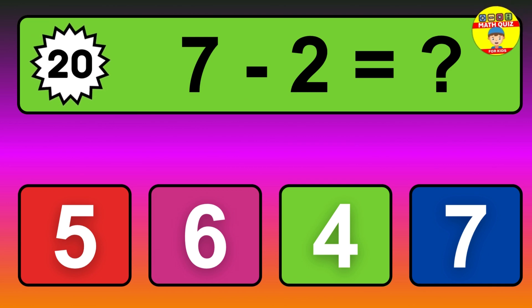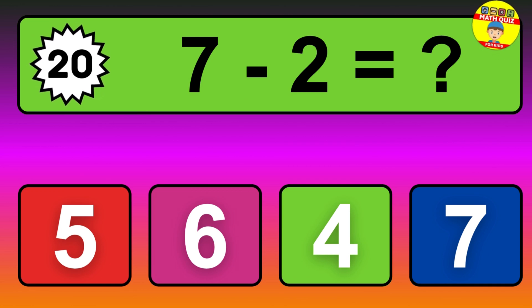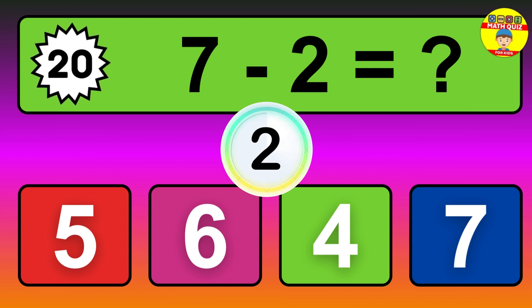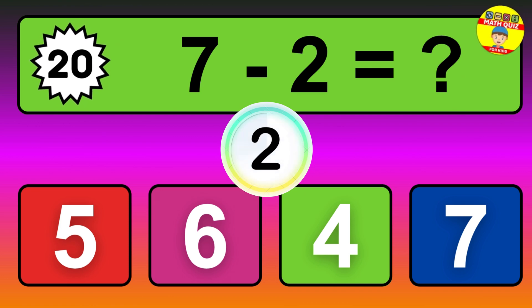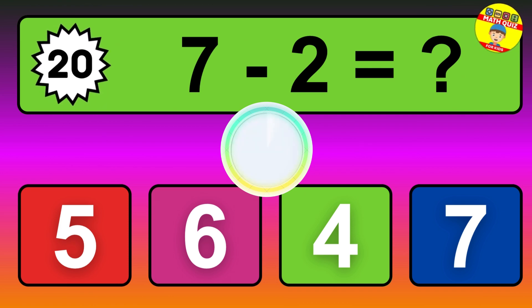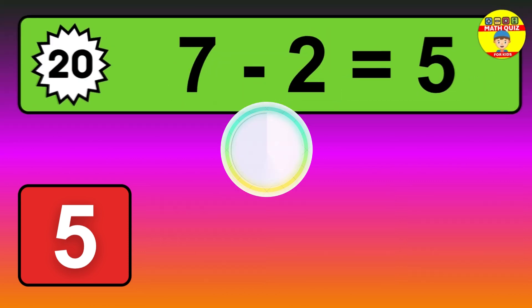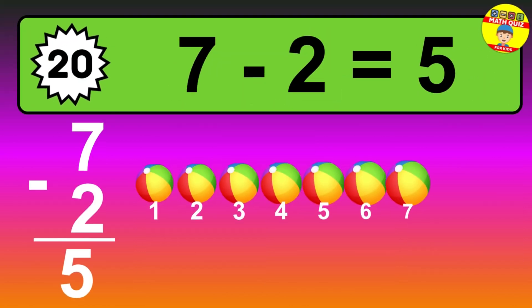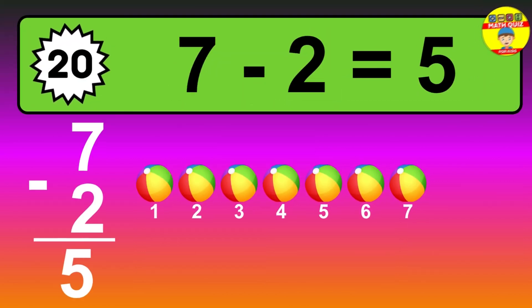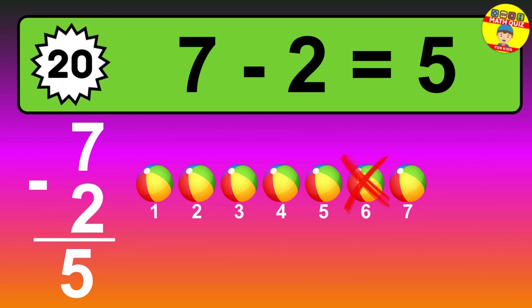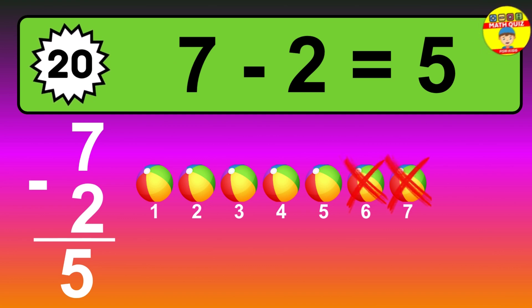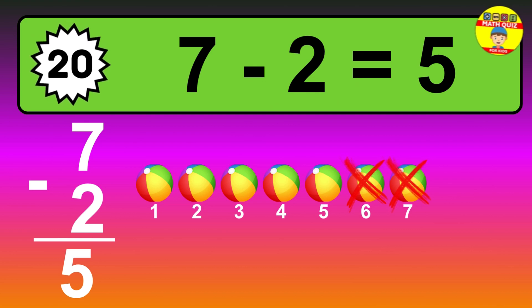Question twenty: seven minus two equals what? The answer is seven minus two is five. Let's count it: one, two, three, four, five.